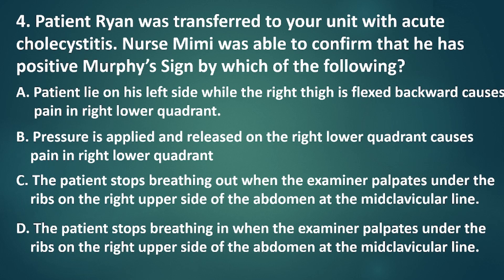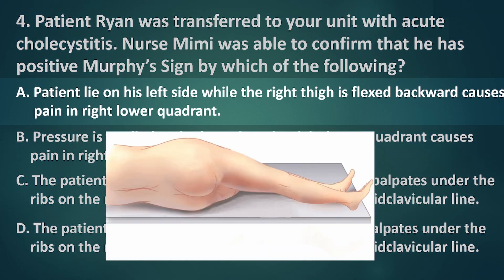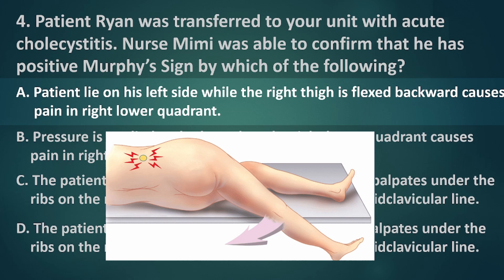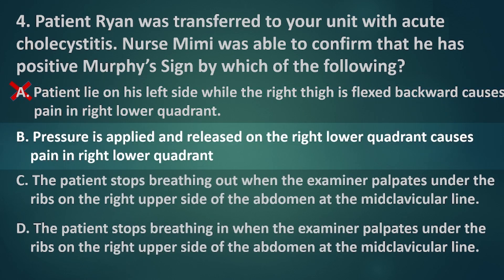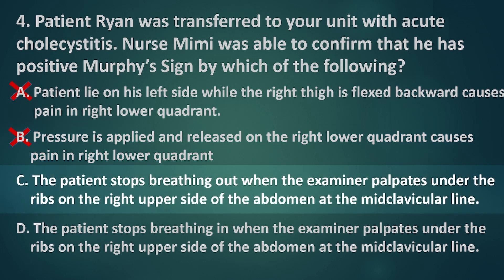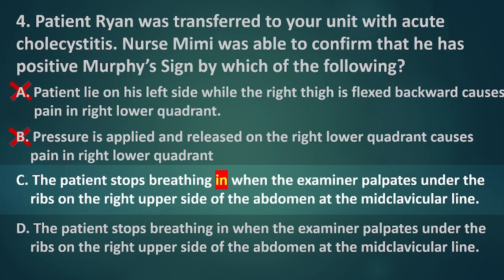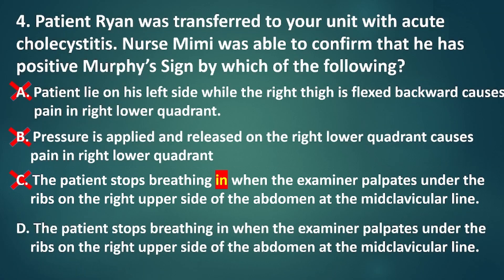Applying the process of elimination: Option A — patient lies on his left side while the right thigh is flexed backward causing pain in the right lower quadrant — is known as the psoas sign, which is an indication of appendicitis. Option B — pressure is applied and released on the right lower quadrant causing pain — is known as rebound tenderness, still an indication for appendicitis. Option C is incorrect because Murphy's sign involves the patient stopping breathing in, not breathing out, when the examiner palpates under the ribs on the right upper side of the abdomen at the midclavicular line. Therefore, the correct answer is letter D.